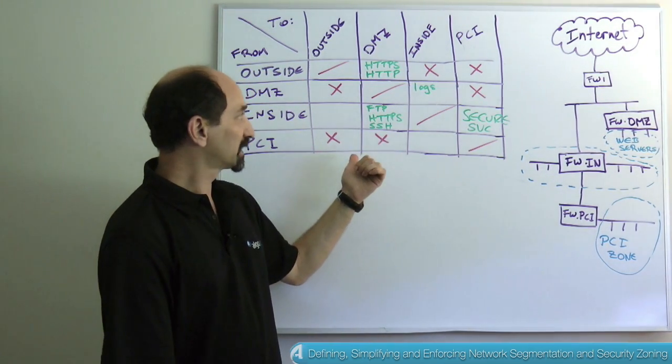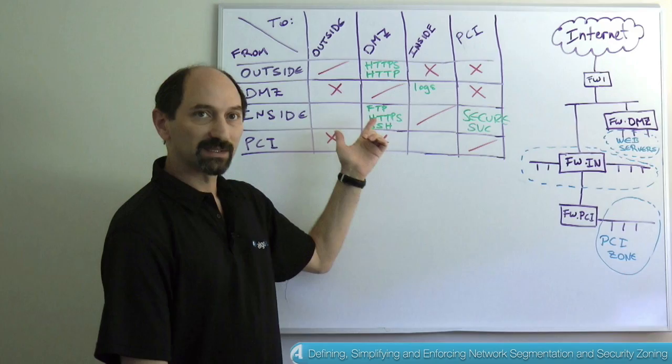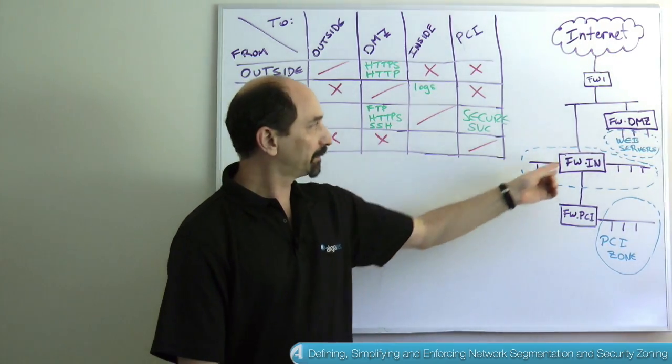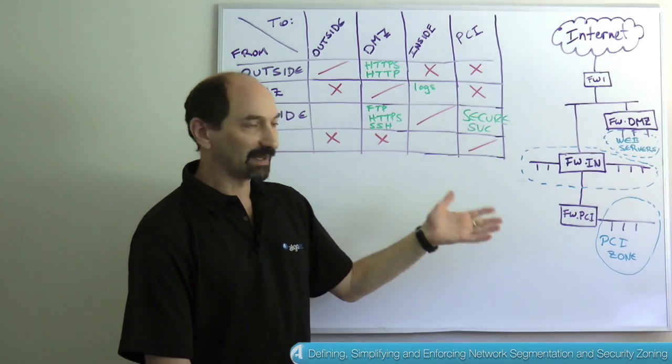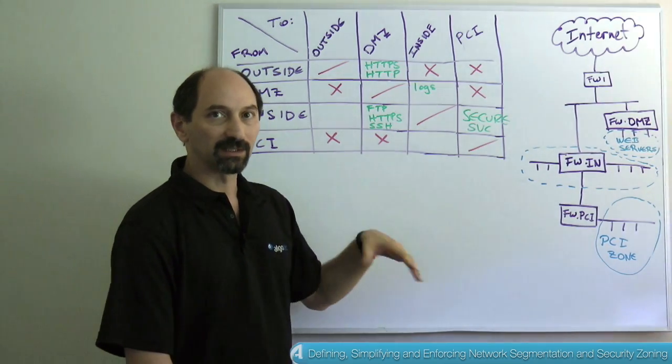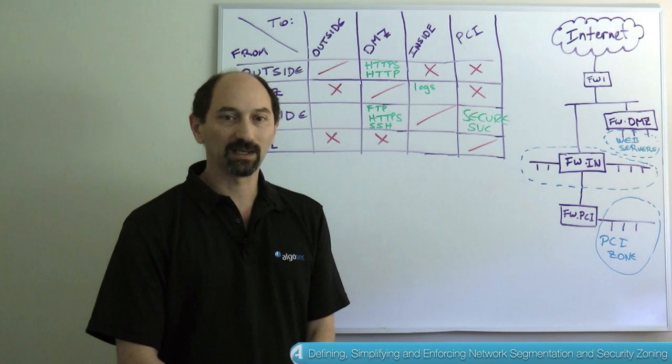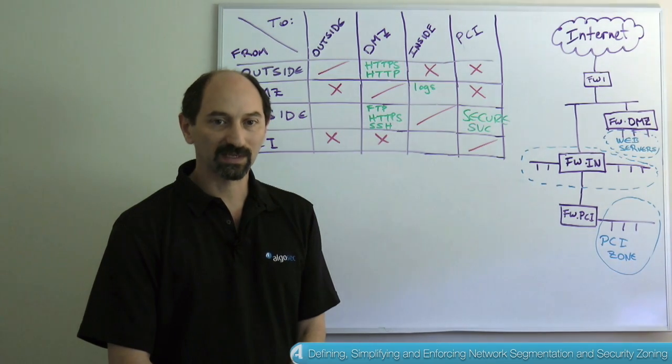Another way of using the matrix is actually taking what is in it and comparing it to the actual rules implemented by each and every one of the firewalls to see whether they are allowing what's in the matrix and denying what's not. And there are software systems that can help you in doing all of those tasks.